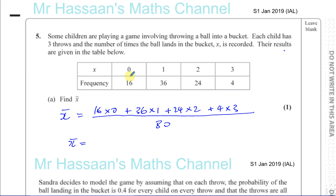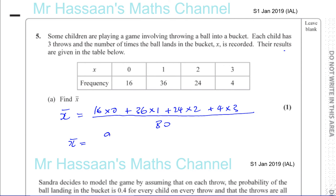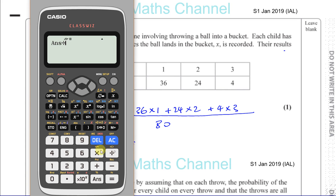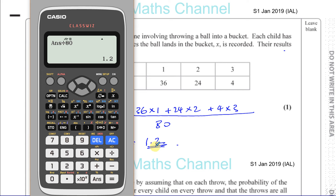So in 16 of the games none of the balls went in, in 36 games one ball went in, in 24 games two balls went in, and in 4 games all three went in. Working this out: 0 + 36 + 48 + 12 = 96, divided by 80, which gives you 1.2. So the answer for part (a) is 1.2 — that's the mean number of times the ball went in the bucket per game.